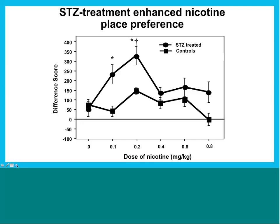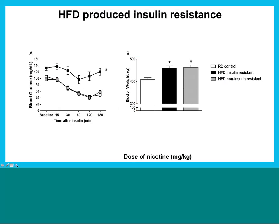This enhanced preference is most apparent at lower doses of nicotine, essentially showing again that diabetic animals have an enhanced rewarding effect of nicotine. If we take these animals and treat them with insulin, that enhanced nicotine reward is diminished and goes away — showing again that it is an insulin-dependent effect.